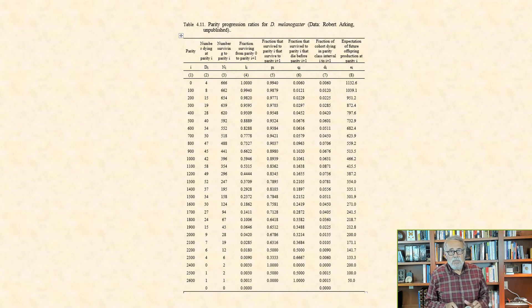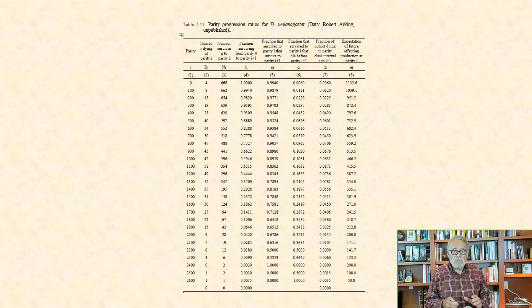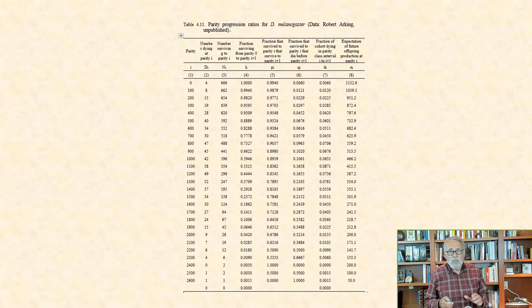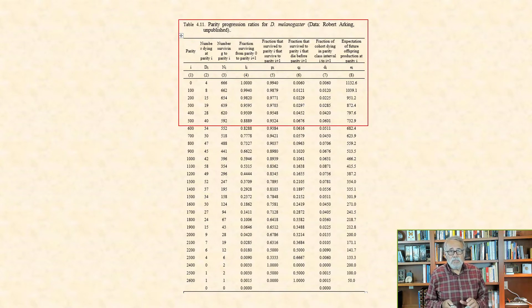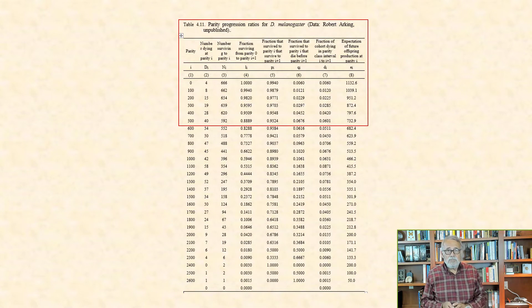Here is a table showing parity progression ratios for reproduction in Drosophila melanogaster, the fruit fly. I will look at the parameters for the top six egg classes in increments of 100, from 0 to 500.